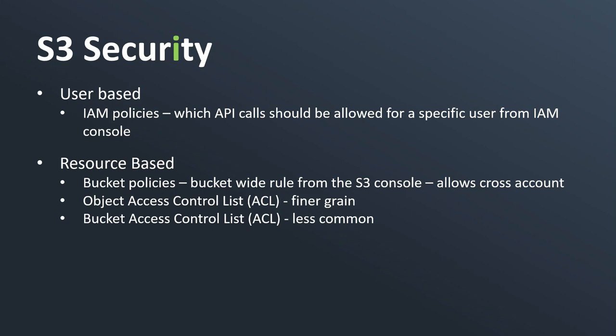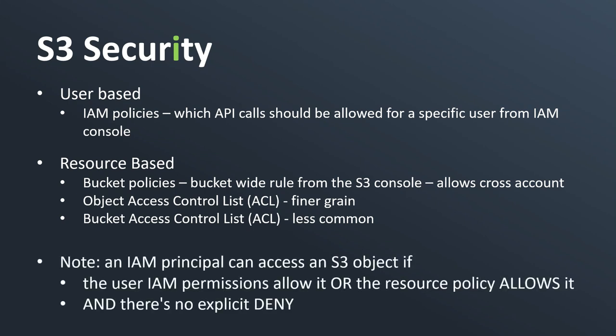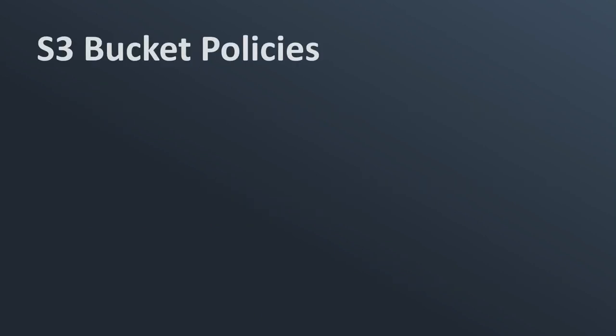An IAM principal — a user or role — can access an S3 object if the IAM permission allows it, meaning you have an IAM policy attached to that principal allowing access to your S3 bucket, or if the resource policy (your S3 bucket policy) allows it. You also need to make sure there is no explicit deny. If your user is allowed via IAM but your bucket policy is explicitly denying that user, then access will be denied.